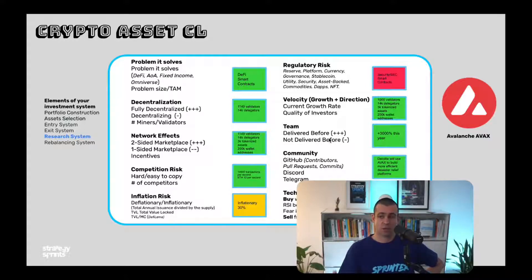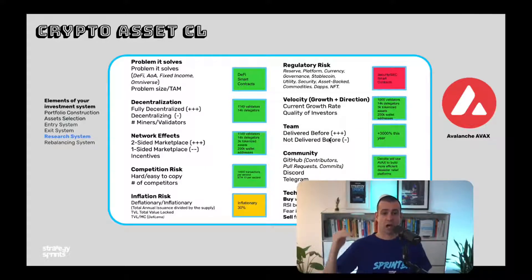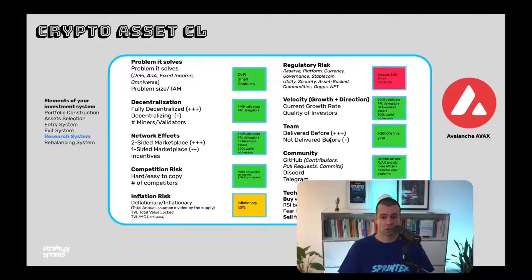Point number two: decentralization. Is it decentralized? This matters because we're moving from centralization to decentralization — centralized assets will become obsolete. It also de-risks your investment. The main crypto risks are: centralization, lack of network effect, competition risk, regulation risk, inflation risk, team risk, and community risk. To assess decentralization, check the number of validators: if it has more than 2,000 validators, it's decentralized. If it's moving in that direction, you might still bet on it.